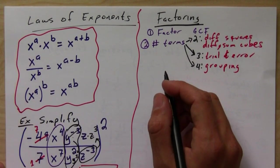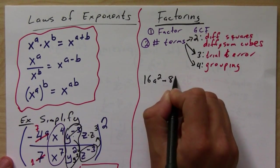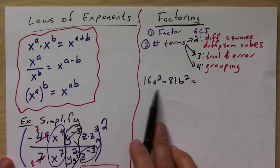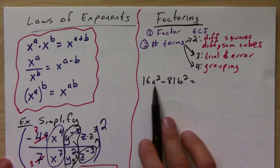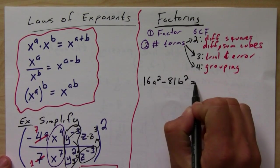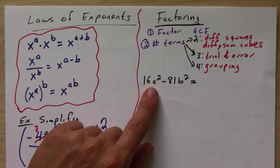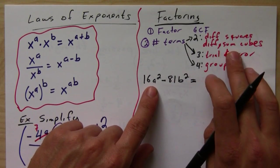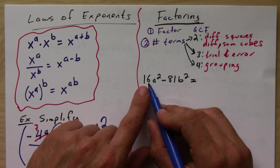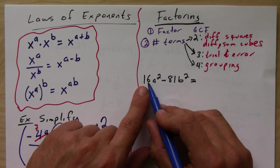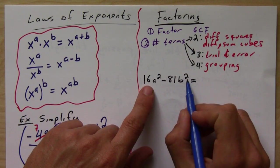Let's say for example, you have 16a squared minus 81b squared. So first you take a look, you see, okay, is there anything that you can factor out of both of these? Well, no. Then you notice that you have two terms. So if you're going to factor this, it's going to be either a difference of squares or a difference of cubes. Now, you notice that 16a squared has a perfect square root. And 81b squared also does.